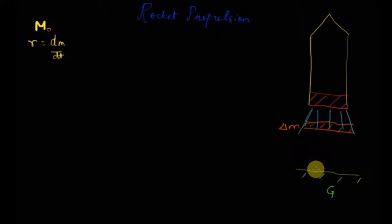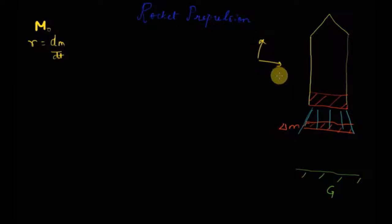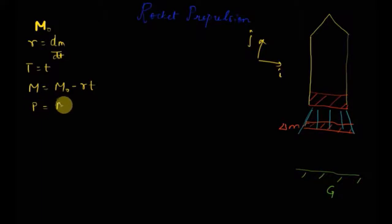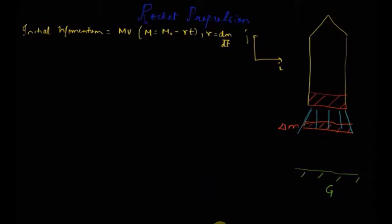Let's say we are observing this rocket from the ground, and let's assume the rocket, the ejected masses, and the ground as our system. Let's also fix the coordinate system: our x-axis i-cap will be along this direction and j-cap will be in the vertically upward direction. So at any time t, the mass of the rocket will be given by m0 minus r times t, and the velocity of the rocket is v. The momentum of the rocket is given by mass times velocity — capital M times v.